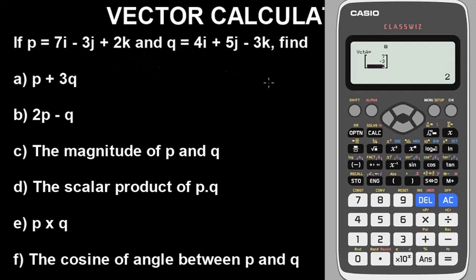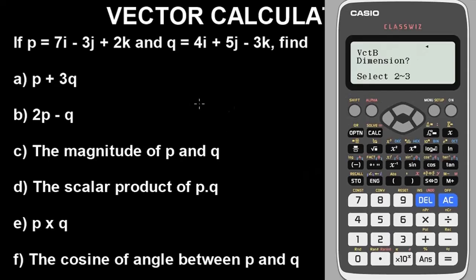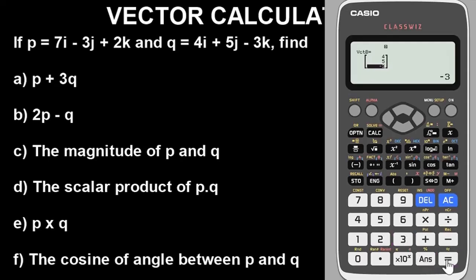Now let's go ahead and input the values for vector Q. To select vector Q, go to option, then define vector — option 1. Let's define vector Q as vector B in this calculator. Press 2 to select vector B. The dimension is still three-dimensional. Input the values respectively: 4, then 5, then minus 3. The values are already stored automatically. Let's clear the screen and begin to find the answers one after the other.